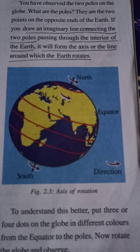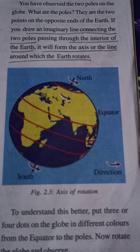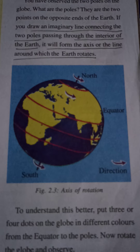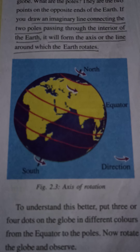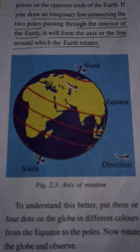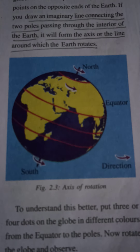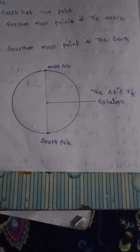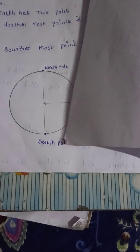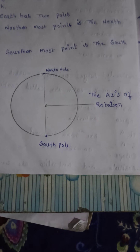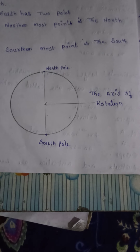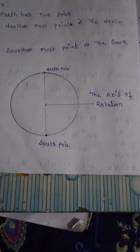The imaginary line which is drawn from North Pole to South Pole is known as the axis of rotation.